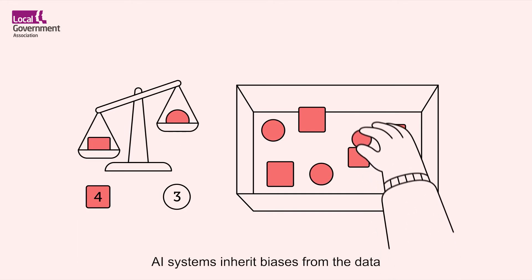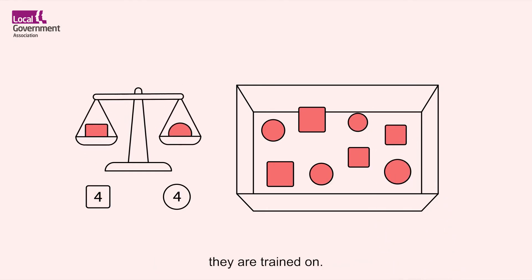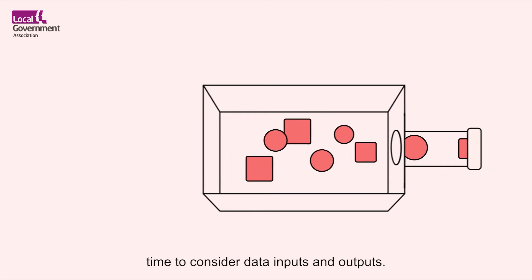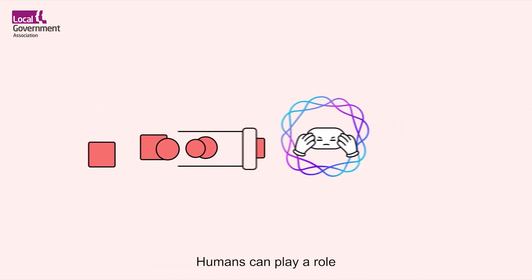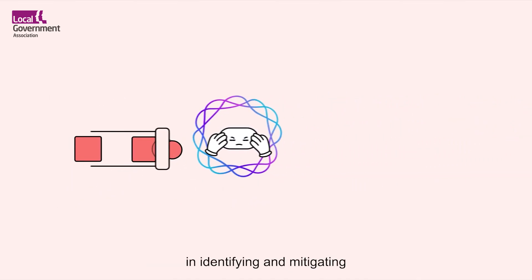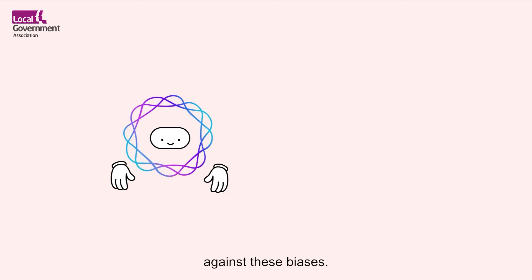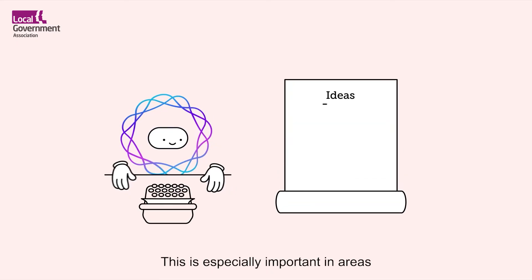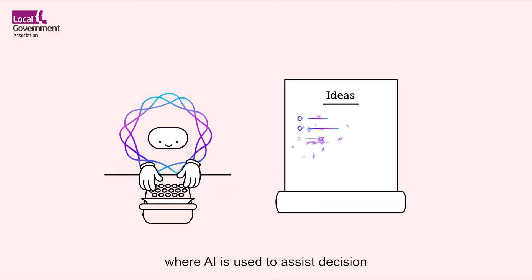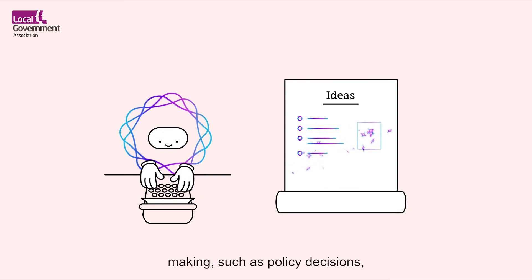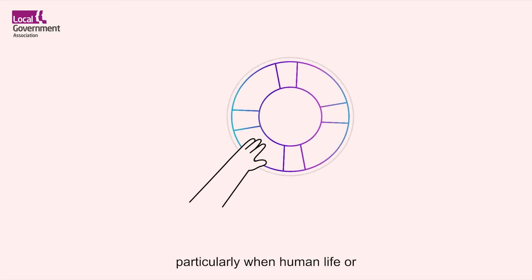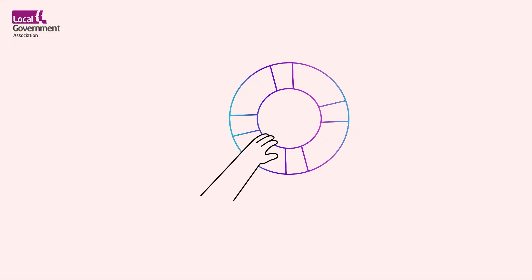AI systems inherit biases from the data they are trained on. Given adequate time to consider data inputs and outputs, humans can play a role in identifying and mitigating against these biases. This is especially important in areas where AI is used to assist decision making, such as policy decisions, particularly when human life or safety are dependent on it.